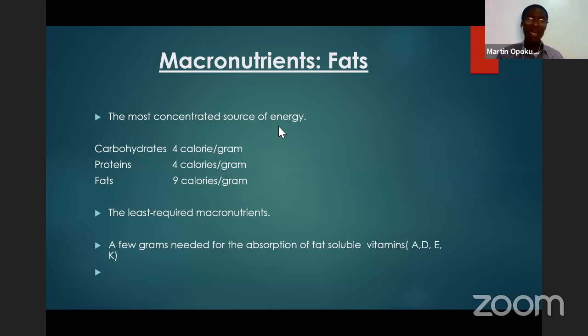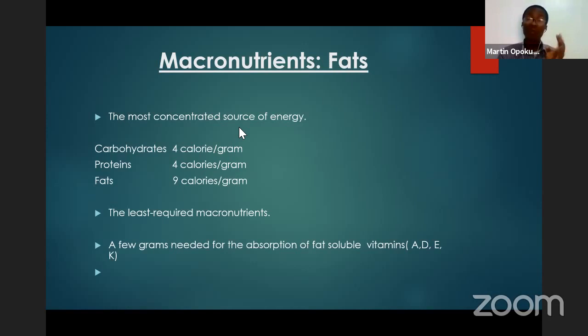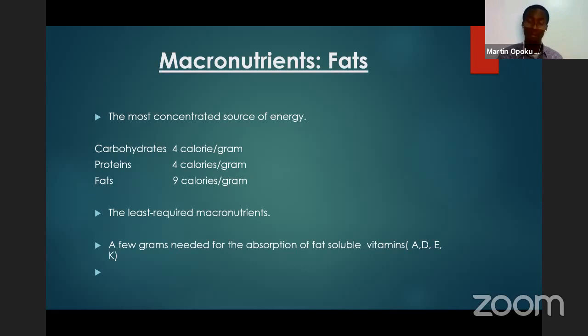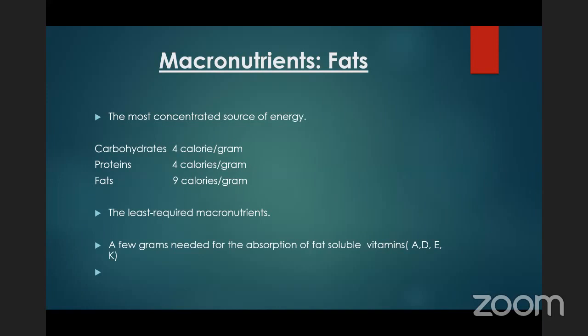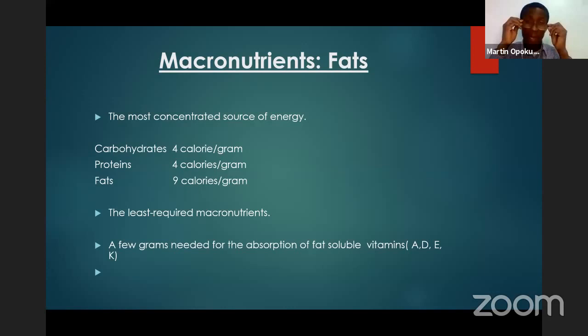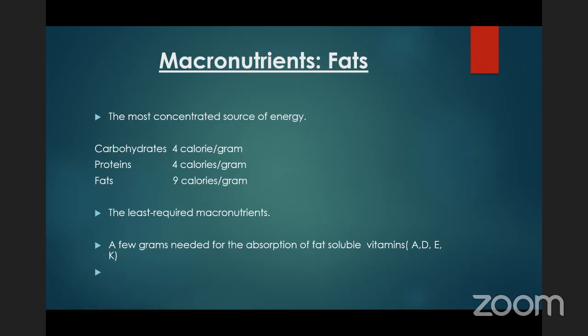Carbohydrates: one gram of carbohydrate gives four calories. One gram of protein also gives four calories. But one gram of fat gives nine calories — nine calories per gram. Fat is two and a half times more calorie-dense than carbohydrates or protein. Fat is a very, very dense source of calories.